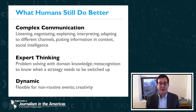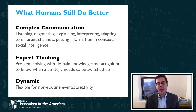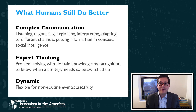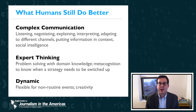What are humans good at — what do they do better than algorithms? I'd say there are three main things. First, people are very good complex communicators. Complex communication is about listening, negotiating, explaining, and interpreting. It's about adapting content to different channels, putting information in context, and social intelligence. Reporting — collecting information from different sources — can involve undertaking difficult interviews with sources that are unmotivated to share information, or sources that are deceptive or antagonistic. We still need humans doing reporting to get information out of other human sources.